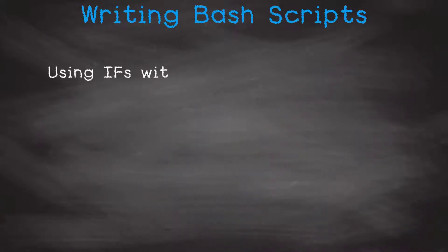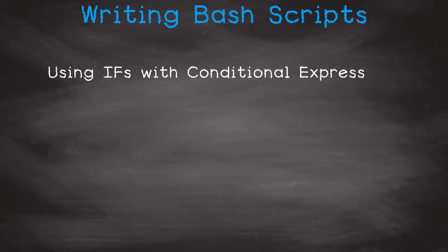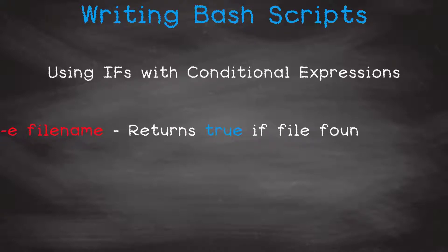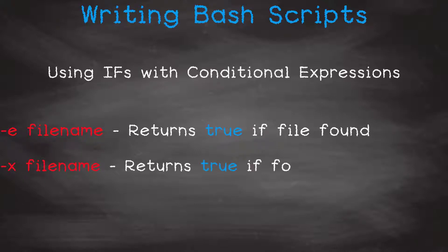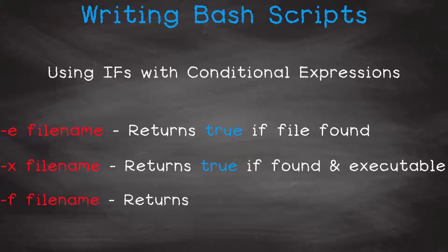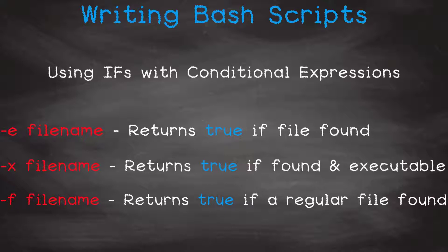Now moving on to what bash calls conditional expressions. If in an if statement we code minus e and a file name, it will return true if that file is found. If we use the minus x flag and file name it will return true if the file is found and it is executable. And minus f and file name will check that the file is a regular file — for example, it is not a directory. These are the most common ones but not a complete list by a long way.